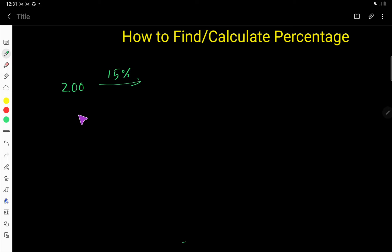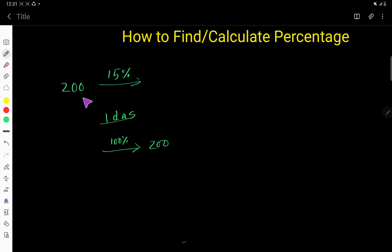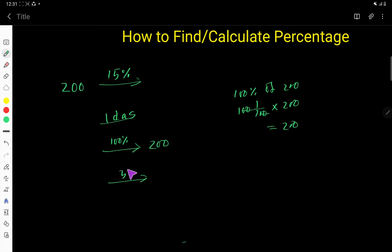Let me give you some ideas so that you can easily find out the percentage of a number mentally. The first idea: 100% of a number is the number itself. So 100% of 200 is 200. Let me prove that — 100% means 1 over 100, times 200, and the zeros cancel, giving 200. Then 50% of a number is half of the number.